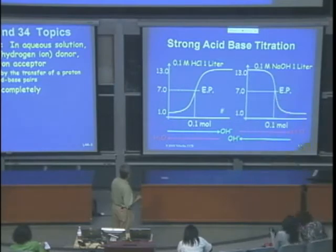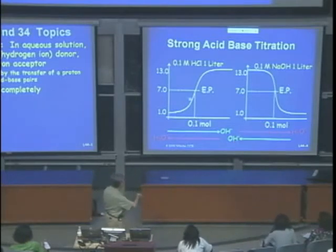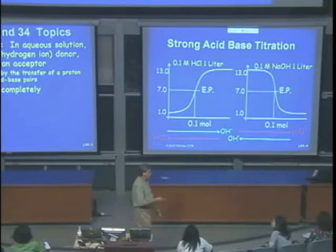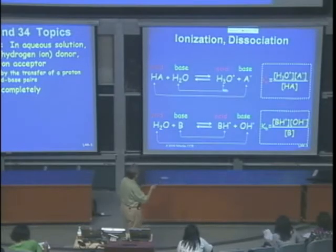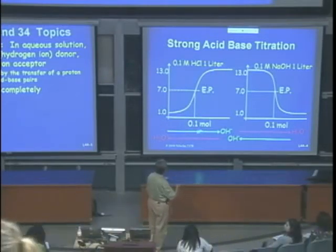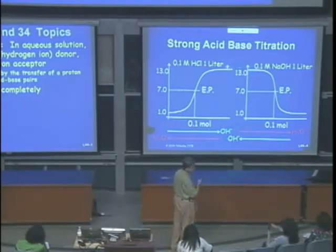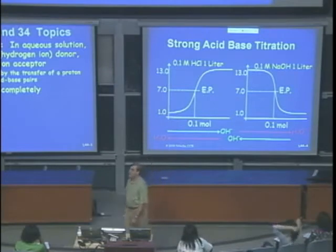For a titration of a strong acid with a strong base: if you have 0.1 molar HCl and titrate with 0.1 molar OH⁻, the pH at the start is 1, since the log of 0.1 is −1, times −1 equals 1. The equivalence point will be pH 7 — when all the H⁺ has been neutralized by OH⁻. If you keep adding base, you get approximately 0.1 molar base at the end.